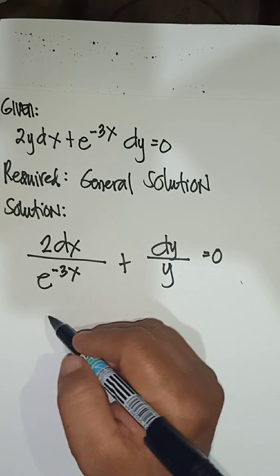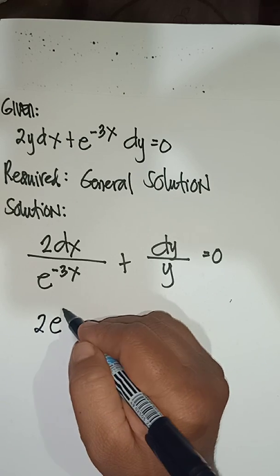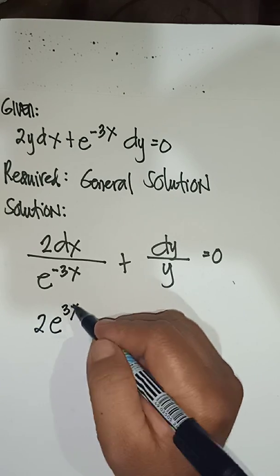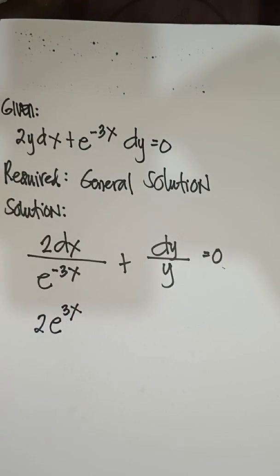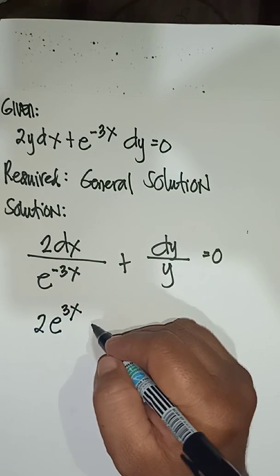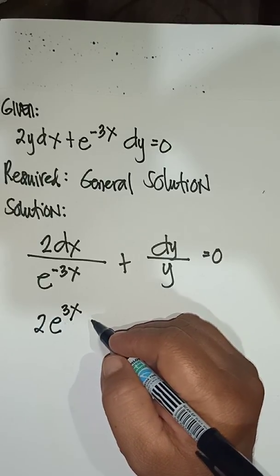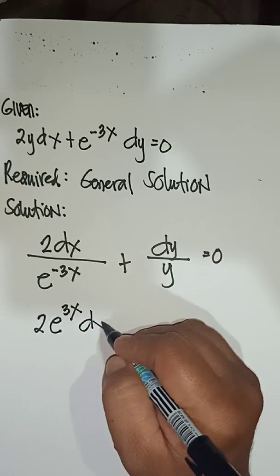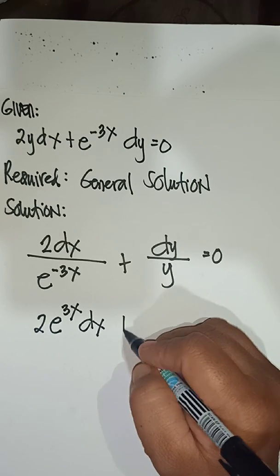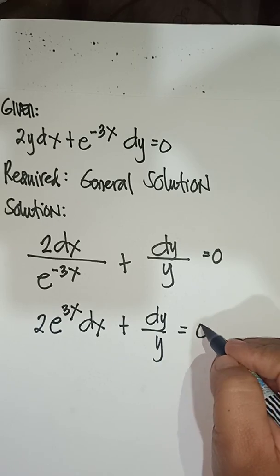We can express this as 2e^(3x), because if you bring up a negative exponent, that would become positive. So, 2e^(3x) dx plus dy over y equals 0.